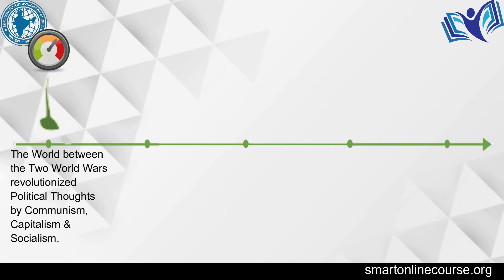The world between the two world wars was revolutionized in political thought by communism, capitalism, and socialism. Nationalism became stronger; colonial empires were trying to remain stronger. But instead of conquering territories, it was ideal to rule the economies of other countries rather than launch political attacks. Thus, ruling economies of other countries replaced conquering territories by wars.